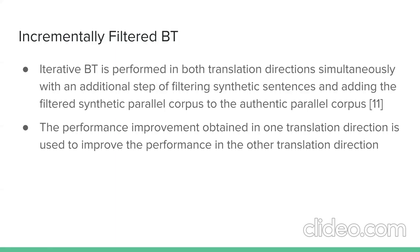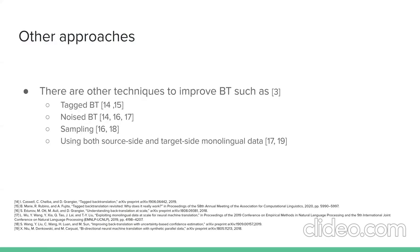SENT-PI filtered back-translation performs iterative back-translation in both translation directions simultaneously, with an additional step of filtering synthetic sentences and adding the filtered synthetic parallel corpus to the authentic parallel corpus. The performance improvement in one translation direction is used to improve performance in the other. Other approaches to improve back-translation include tagged back-translation, noise back-translation, sampling, and using both source-side and target-side monolingual data.